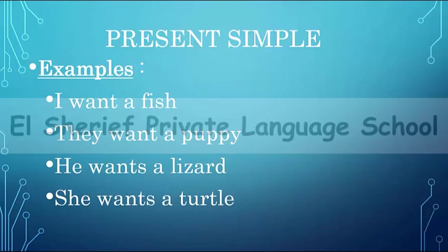Look at the first example: 'I want.' We didn't add anything to 'want,' so we said 'I want a fish.' The same at the second example: 'they want a puppy.' So subject I, we, you, they is followed by the infinitive or base verb. Here the base verb is 'want,' so we say: I want, you want, they want.